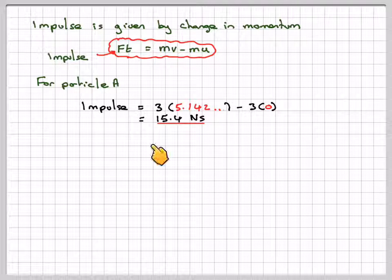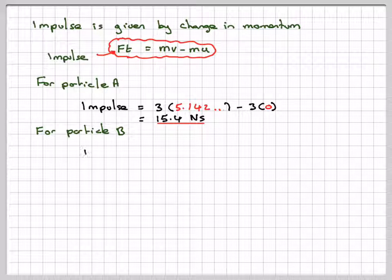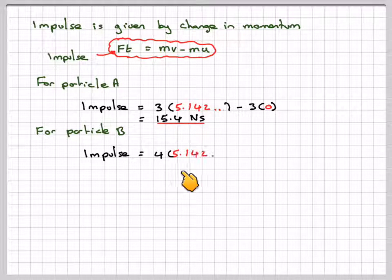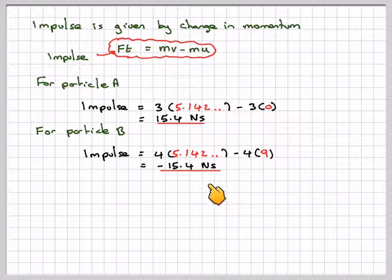And for particle B, the impulse will be 4 times 5.142 minus 4 times 9, so that's going to give me minus 15.4 newton seconds.